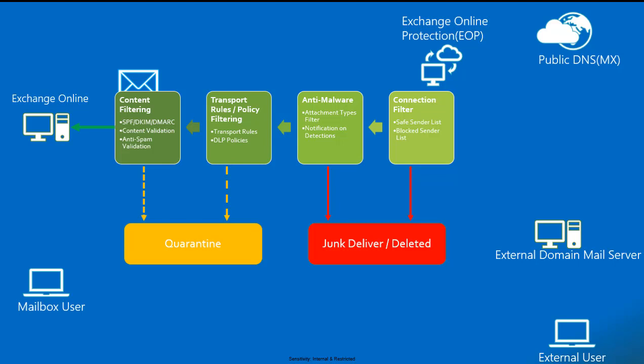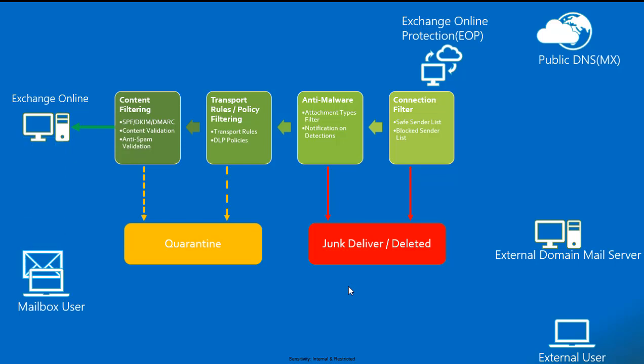Content filtering is where content validation, anti-spam validation, and SPF, DKIM, and DMARC validation happen. In upcoming videos, we will see in detail how SCL values and SPF, DKIM, DMARC validation work against mails. If the received mail passes all content filtering and is found completely legitimate, it is delivered to Exchange Online or on-premises and the mail reaches the user's mailbox directly.